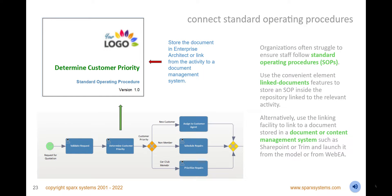Connect standard operating procedures to activities in your process models, making them available to workers following the processes and needing the next level of detail to complete their tasks. Use the convenient link documents feature to store a standard operating procedure inside the repository, linked to the selected activity. Alternatively, use the linking facility to connect to a document stored in a document or content management system such as SharePoint or Trim, and launch it from the model or WebEA.